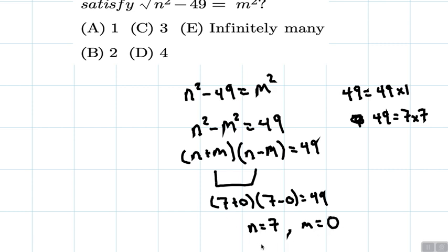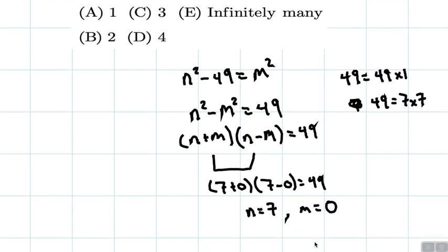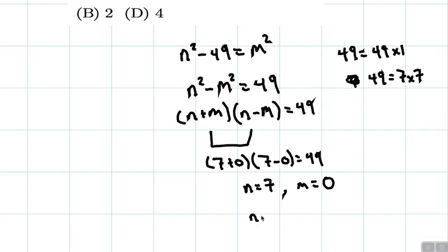We could also have n equal to negative 7 and m equal to 0. And the reason why that works is because then we have negative 7 times negative 7, which is 49. So that's the only way that we're going to get 7 times 7 here.